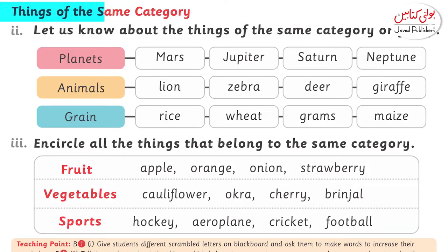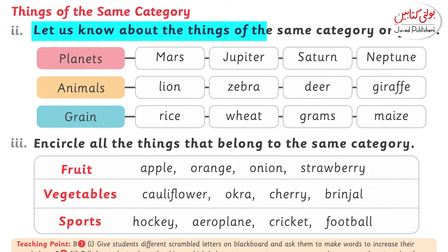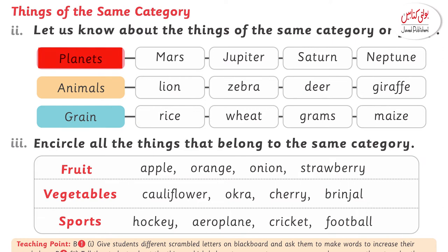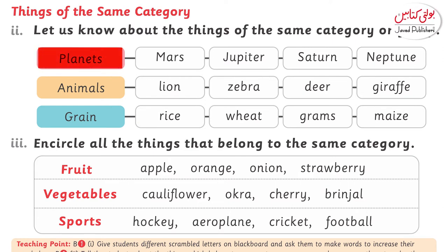Think of the same category. Let us know about the things of the same category or group. Here we have a word, and we need to find which words fall in that category. For example, planets — we find the names that fall in the planets category. Similarly, animals, grains, pulses, etc.